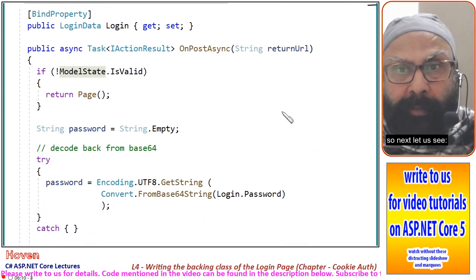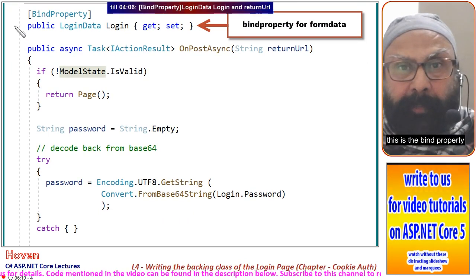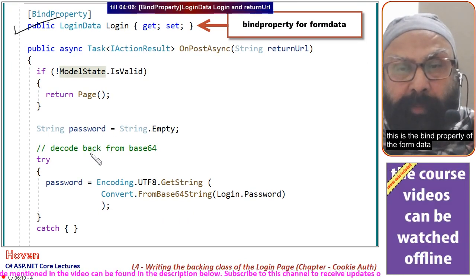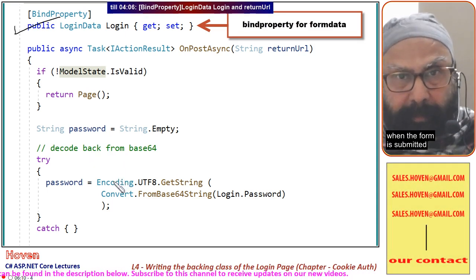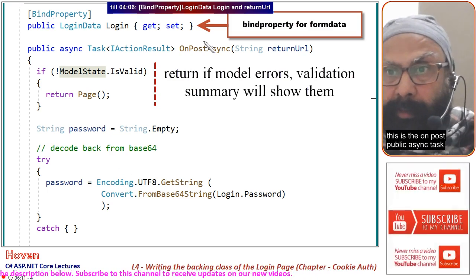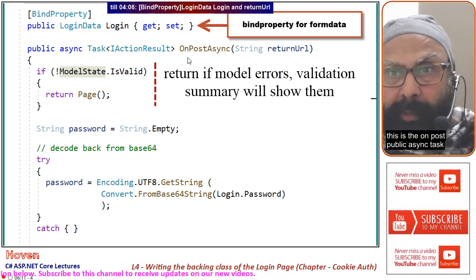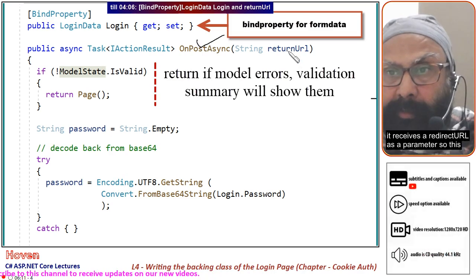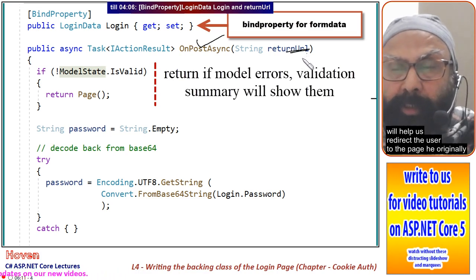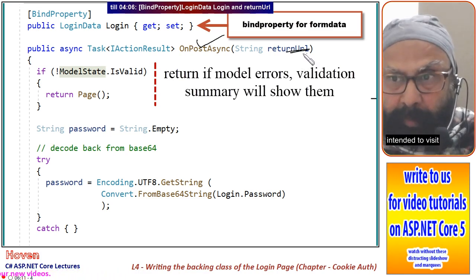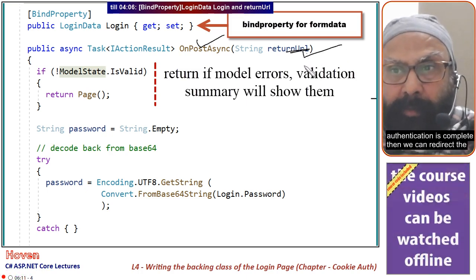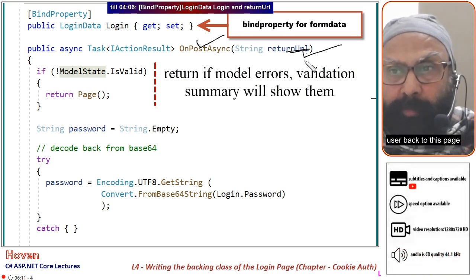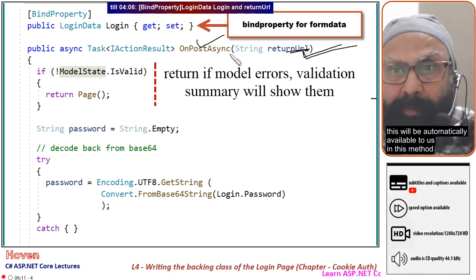Next, this is the BindProperty of the form data. It will be filled with the user's email and password when the form is submitted. This is the OnPost public async task method. It receives a redirect URL as a parameter, which helps redirect the user to the page he originally intended to visit. After authentication is complete, we can redirect the user back to that page — this parameter will be automatically available in this method.